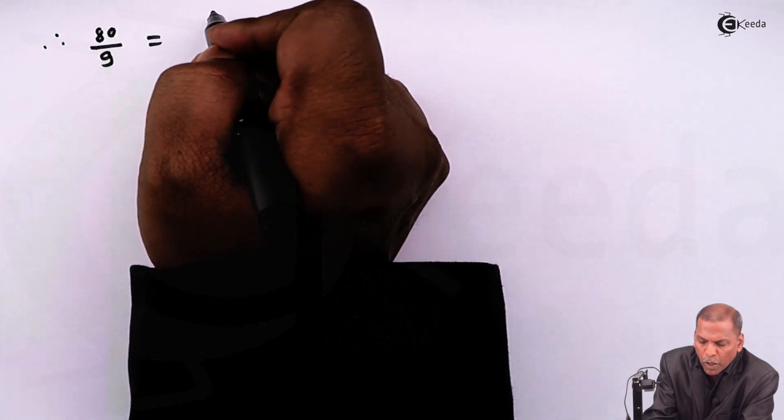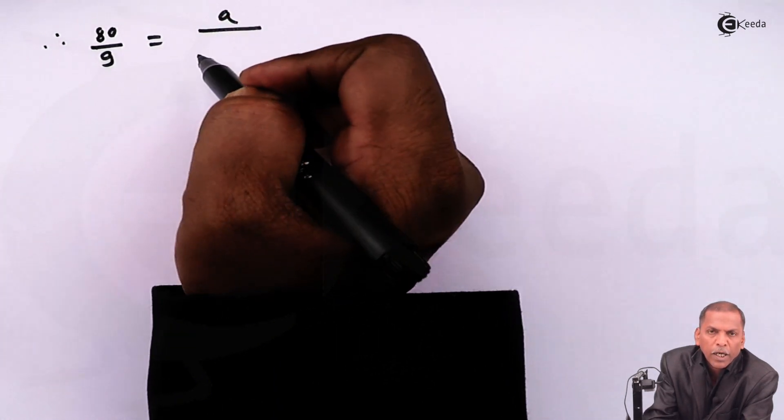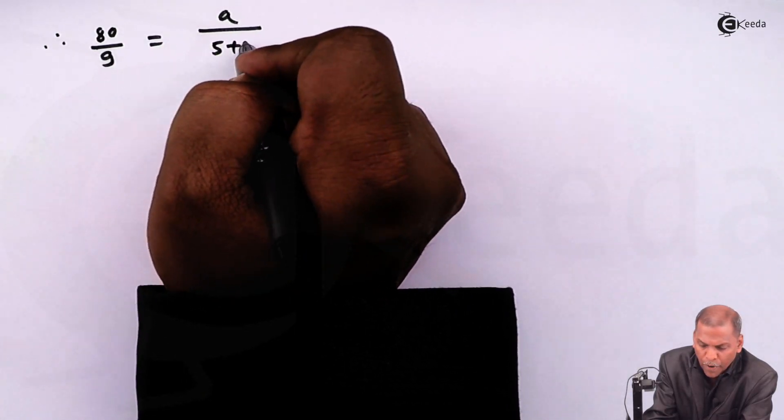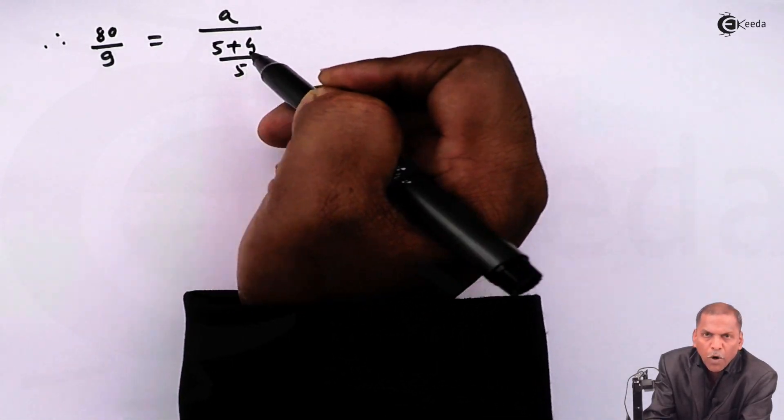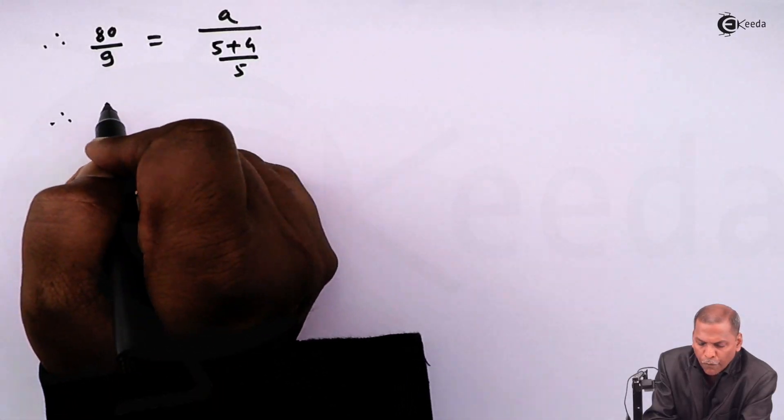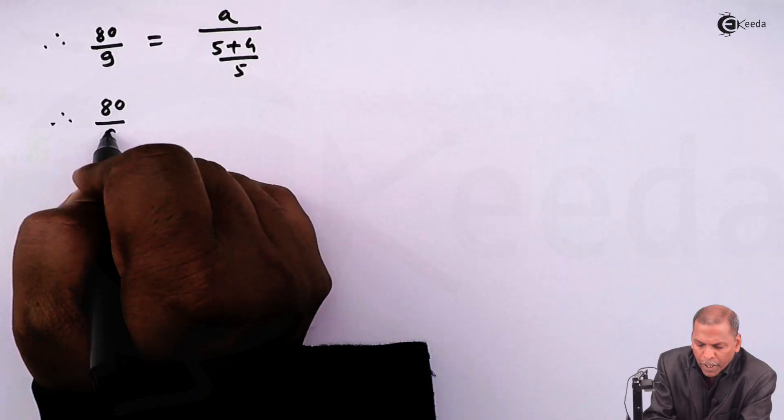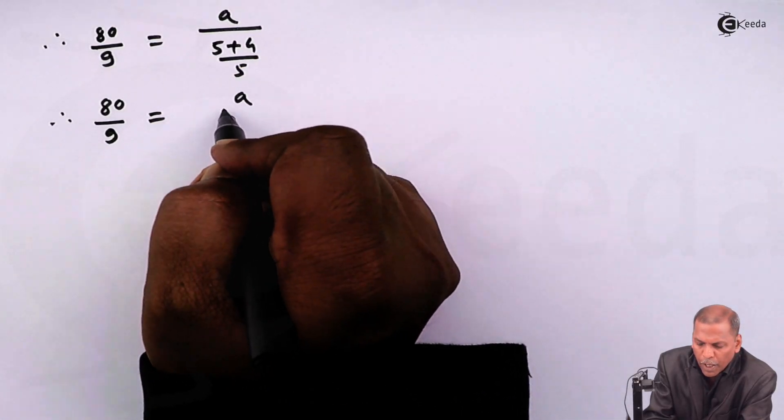Therefore, 80 upon 9 is equal to a upon, in the denominator we go for cross multiply, so we get 5 plus 4 upon 5. On further simplification, we have 80 upon 9 is equal to a upon 9 upon 5.